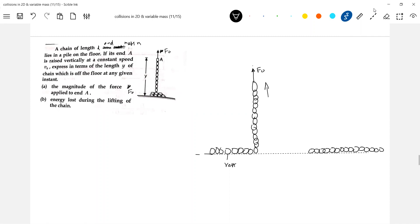Now let y length of the chain be above the ground, then I am going to lift it up with a constant speed V₀, this is also given.